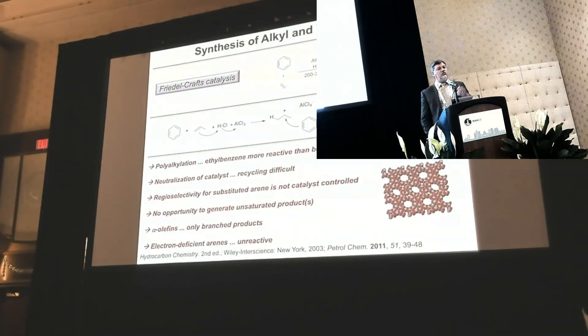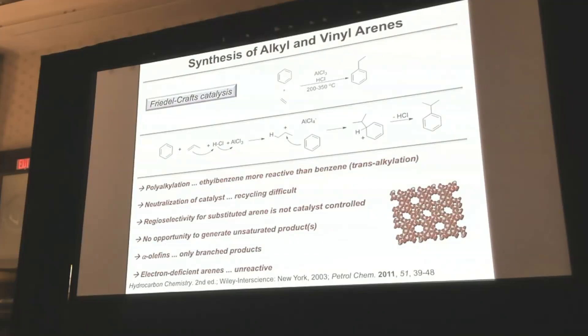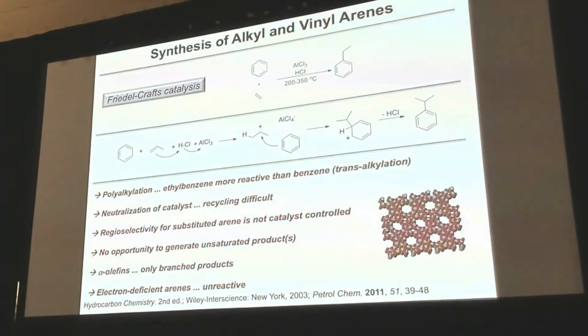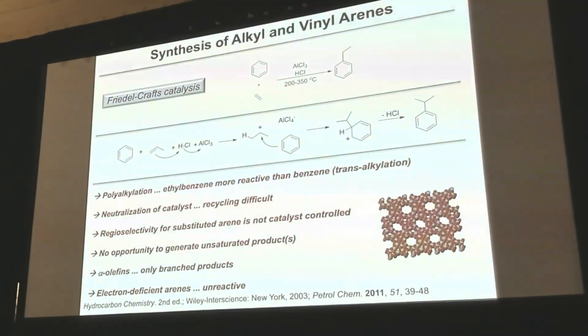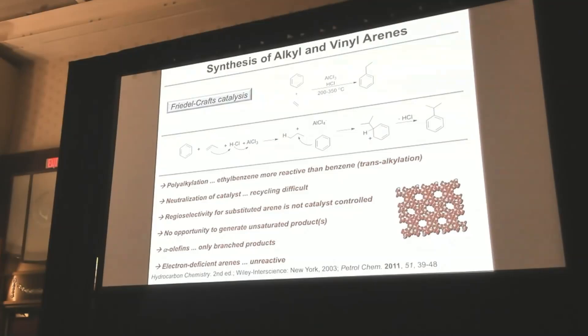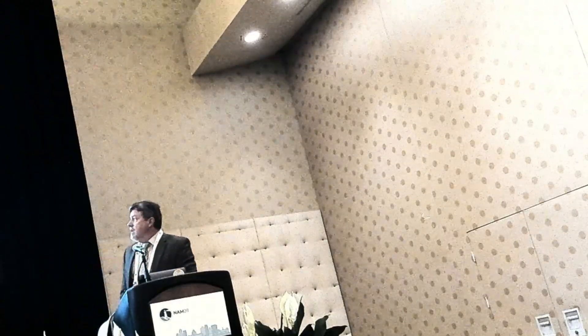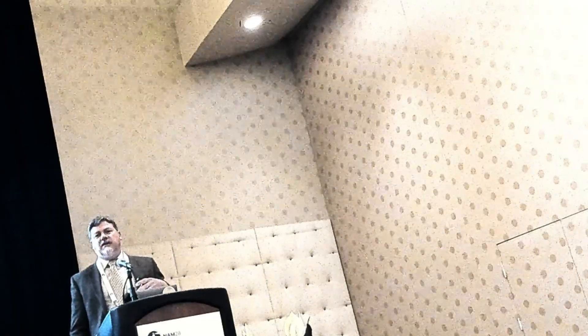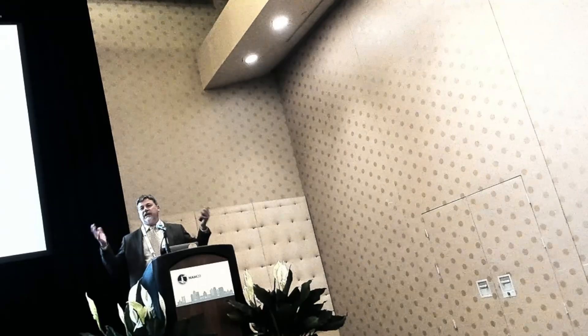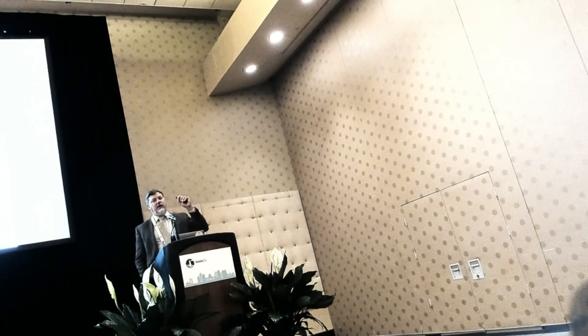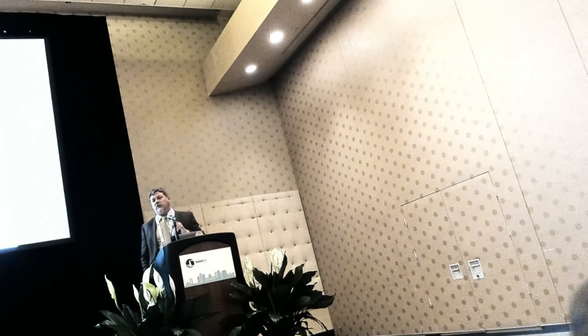But these catalysts do have some intrinsic issues that I think alternative pathways might be able to address. One is that polyalkylation is a persistent problem. The alkyl arenes in acid-based catalysis are typically more reactive than the starting materials, so high conversions and high selectivities is a significant challenge. Regioselectivity for substituted arenes is typically not catalyst-controlled. There are some shape-selective strategies, but in general, the ortho/meta/para selectivity for substituted arenes is dictated by well-known electronic directing rules we learn in organic chemistry, and not by the catalyst.